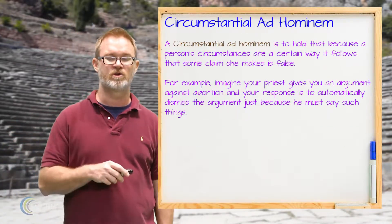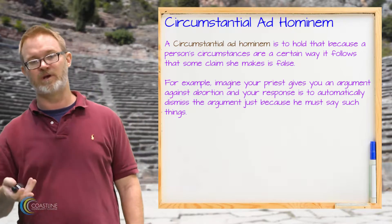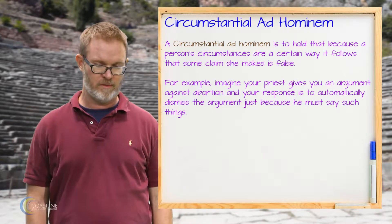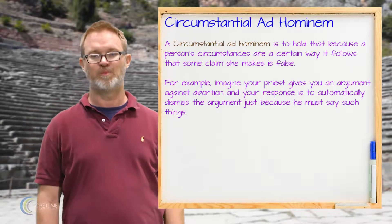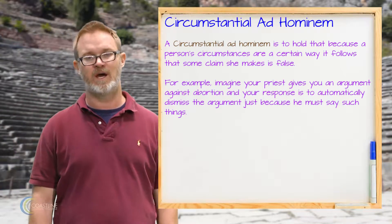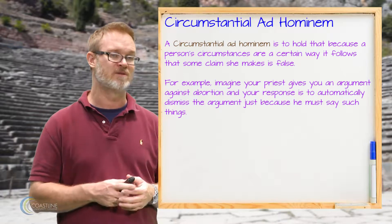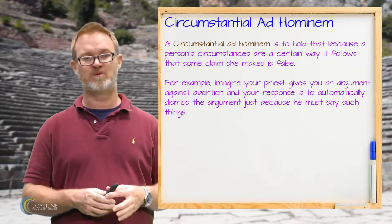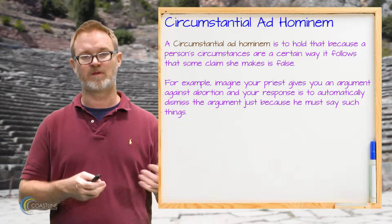The next type is what we would call a circumstantial ad hominem — to attack or criticize someone's circumstances, like their history or something of their past. Imagine you go to your local priest and ask philosophical questions about, say, abortion. Your priest gives you an argument about abortion and how it's wrong. If you were to immediately dismiss what the priest says with, 'well, he's just got to say that — he's a priest, that's part of his job,' that would be a circumstantial ad hominem. Just because he's a priest doesn't mean he doesn't have a good argument. We have to think about the argument given, not the person making it.